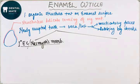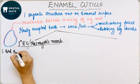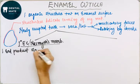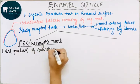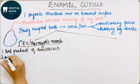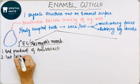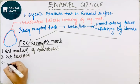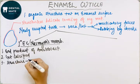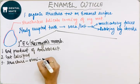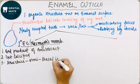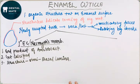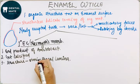The primary enamel cuticle is the end product of ameloblasts, which later get calcified. Ameloblasts are the enamel-producing cells. This structure is similar to the basal lamina, and it helps in the attachment of the enamel to adjacent structures.